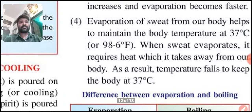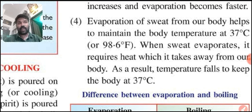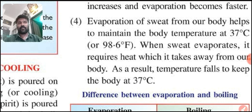Evaporation of sweat from our body helps to maintain the body temperature at 37 degrees Celsius or 98.6 degrees Fahrenheit. When sweat evaporates, it requires heat which it takes from our body. As a result, the temperature falls to keep the body at 37 degrees Celsius. These are the applications in our daily life related to evaporation.